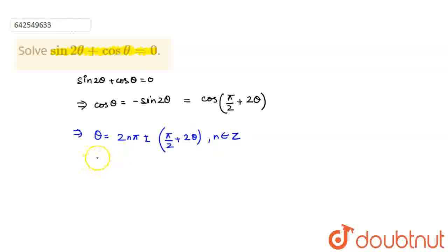Correct? Now, if I take the positive sign, I get theta is equal to 2n pi plus pi by 2 plus 2 theta.